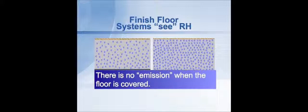This schematic drawing shows two different floor slabs. The one on the left-hand side has a lower moisture condition, and the one on the right-hand side has a higher moisture condition.